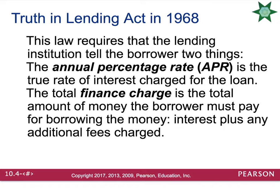There is a law called the Truth in Lending Act that happened in 1968. This law requires that the lending institution tell you, the borrower, two things. First, they have to tell you the annual percentage rate, which is the APR — the true rate of interest charged for the loan. Second, they have to tell you the total finance charge, which is the total amount of money the borrower must pay for borrowing the money: interest plus any additional fees charged.